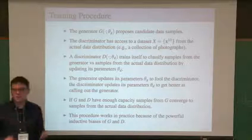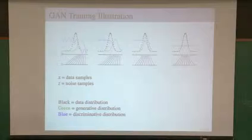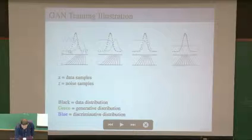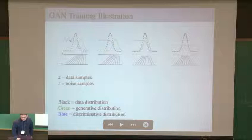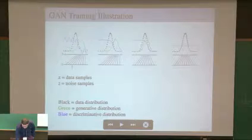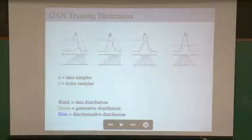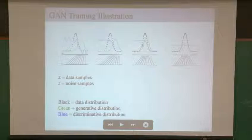Here's a visualization of the training procedure. We have our data distribution shown by the black dots — this is what we're trying to estimate. The implicit generator distribution is shown in green, and the discriminator output in blue. We start by sampling from a uniform distribution in z-space and pass those samples through the generator. The discriminator quickly calls out those samples because the generator's mass is far from the data distribution. This sends a signal back to the generator to shift its mass closer to the actual data distribution, and the discriminator will continue to update until eventually the generator exactly models the data distribution.